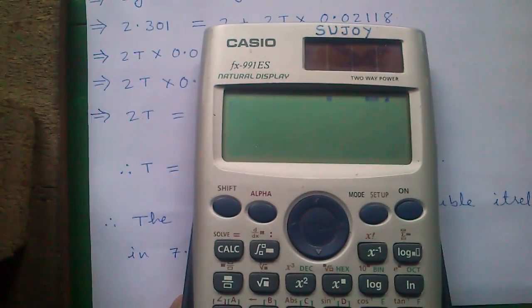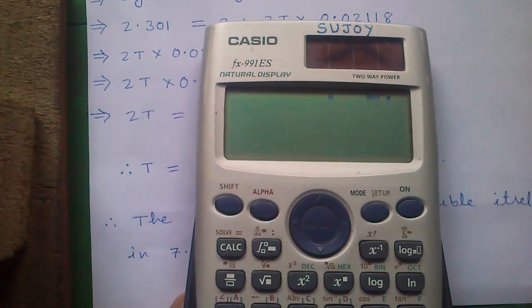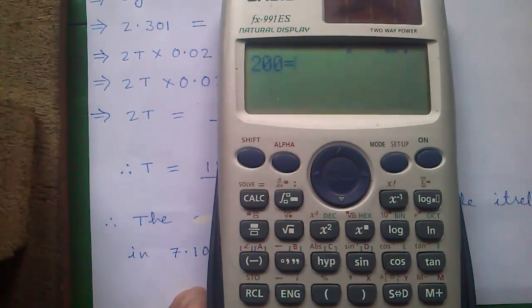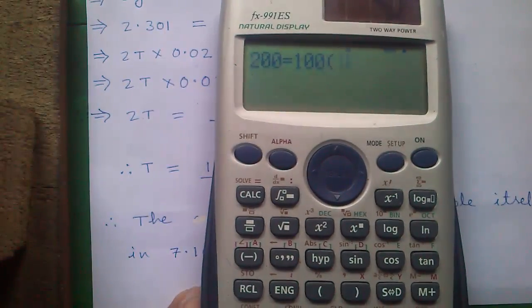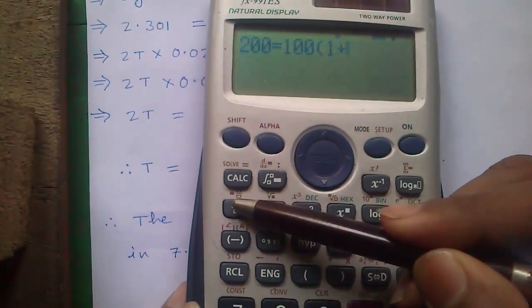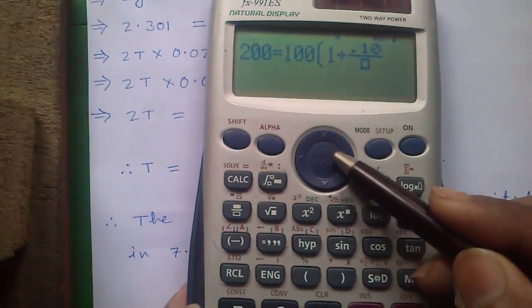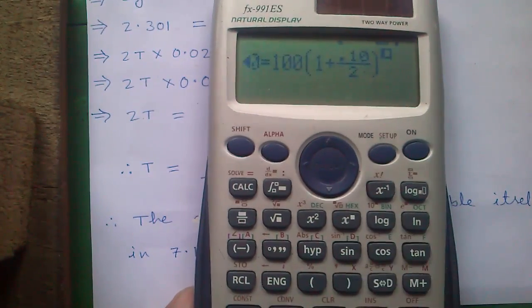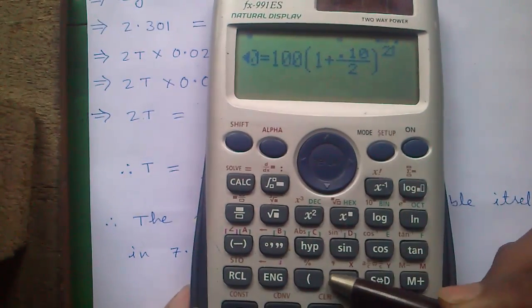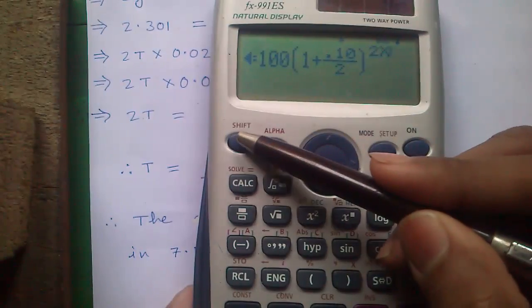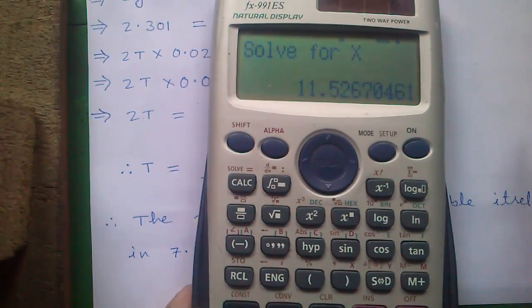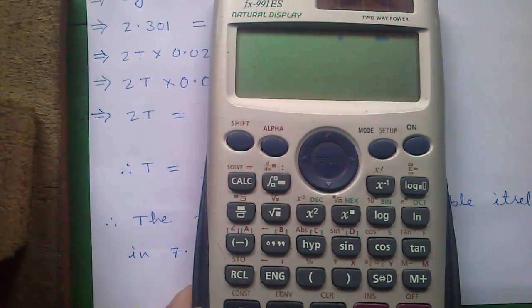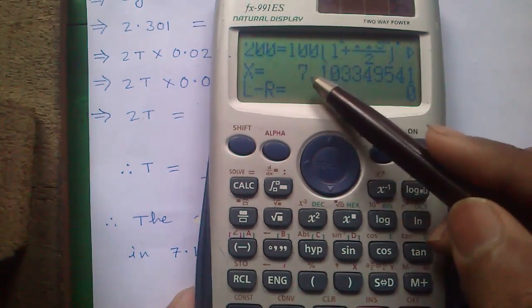Now I will show you how to do it directly on the calculator. Program: 200, then alpha + calc for equals, then 100 × (1 + fraction 0.10/2), right parenthesis, raised to the power 2, then X using alpha + right parenthesis. Press shift and calc to solve. Enter the closest guess — say 10 years — and press equals. The required answer is 7.10 years.